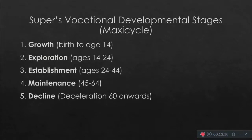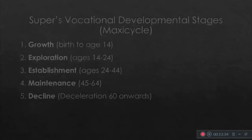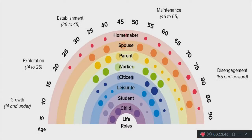Super's vocational developmental stages — the maxi cycle — comes with five stages: first is growth, second is exploration, then establishment, maintenance, and decline. The life rainbow shows growth from birth until 14, exploration from 14 to 25, establishment from 26 to 45, maintenance from 46 to 65, and disengagement from 65 upward.